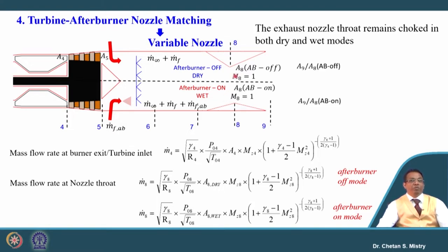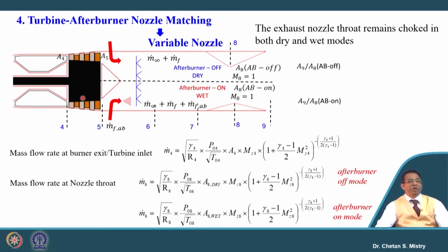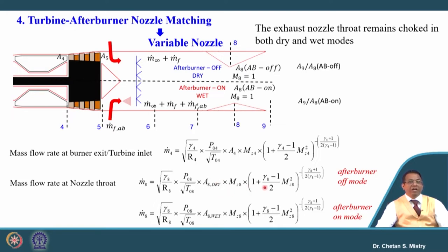The area will be different, so we can clearly see the variation of the area, expressed as A9 by A8. Let us do the continuity equation and the Mach number balance. If we consider station 4 — the entry condition at the turbine or exit condition of the burner — that can be represented in terms of corrected mass flow rate, which is a function of the entry Mach number at the turbine, and we know this entry Mach number equals 1. Similarly, at the throat, the Mach number also equals 1.